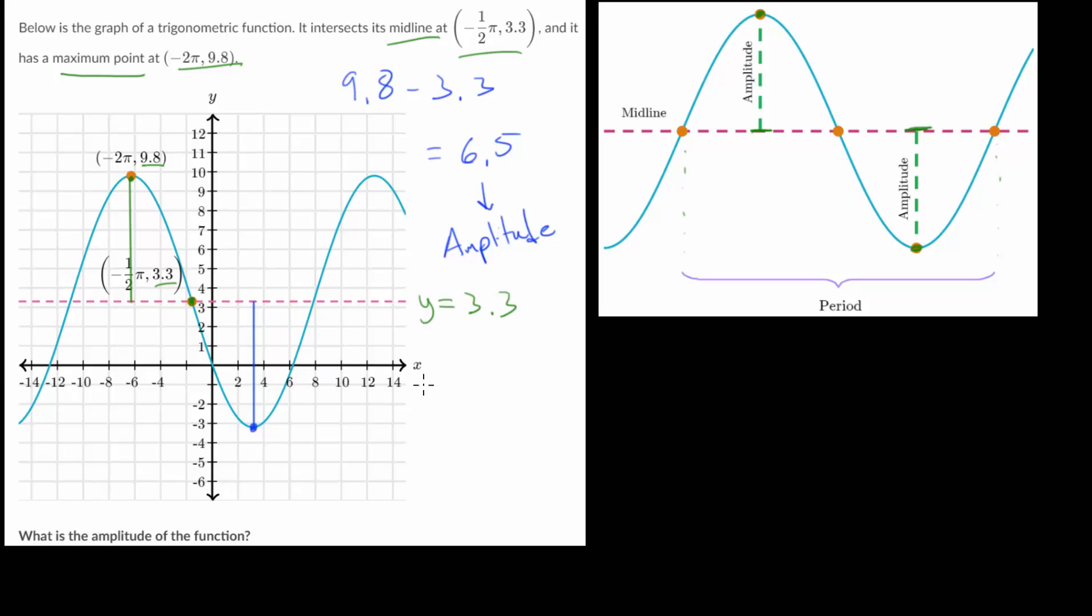So we will take the midline value of 3.3 and we will subtract the amplitude. And this should give us this y value here.